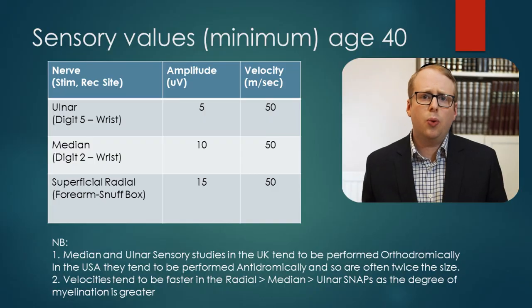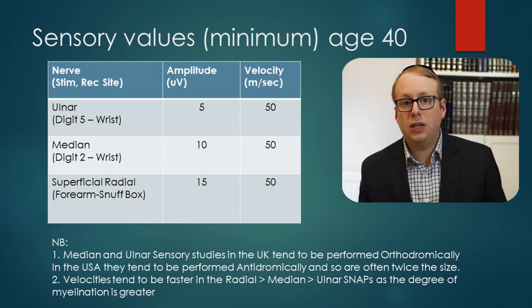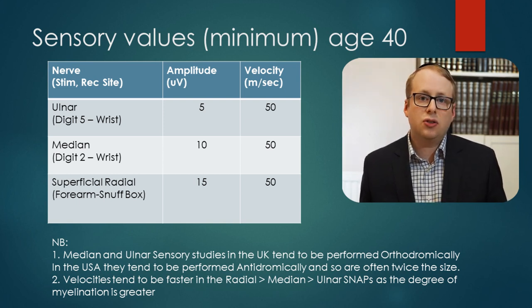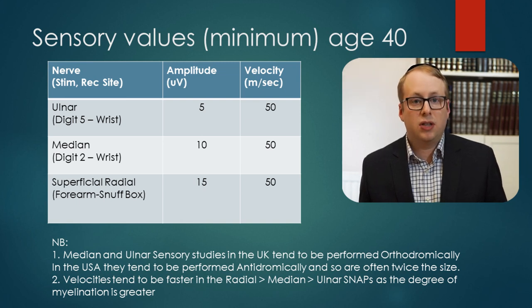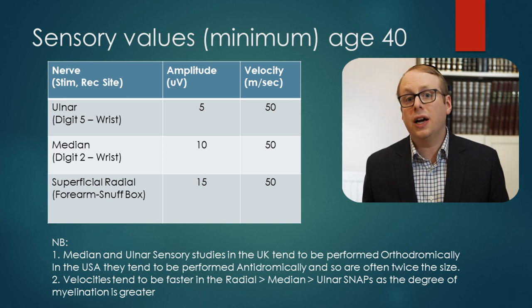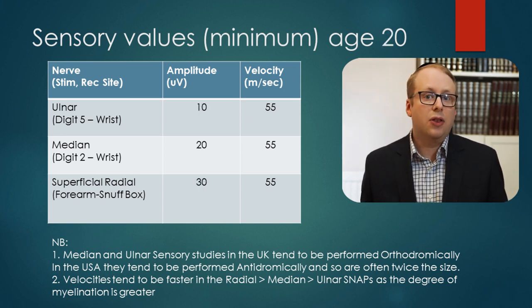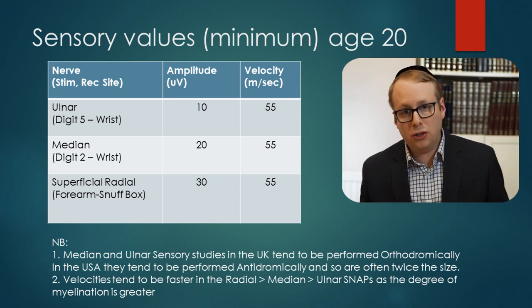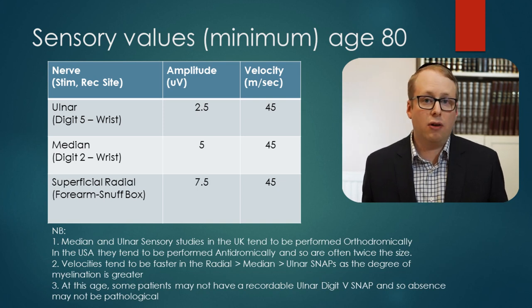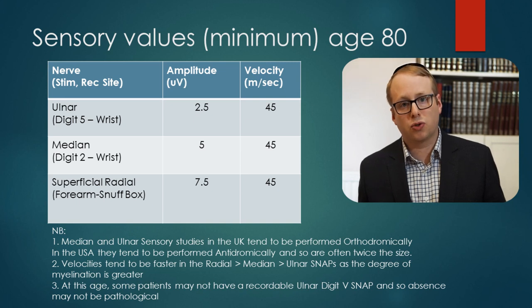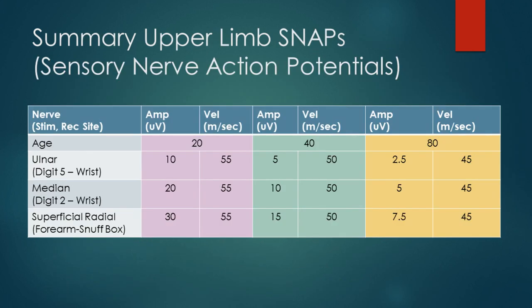Here are some minimum numbers for an average-sized person at the age of 40, and as a good rule of thumb, amplitude halves as age doubles. Let's start with the sensory values — they're quite simple. In the hand, we routinely measure ulnar, median, and radial sensory responses. These nerves should be in ascending order: 5, 10, and 15 microvolts in amplitude. A microvolt is tiny — it's a millionth of a volt. At the age of 20, these should be double that, so the ulnar, median, and radial responses should be at least around 10, 20, and 30 microvolts respectively. By the age of 80, these could be halved to 2.5, 5, and 7.5 microvolts respectively. Velocity should be at least 55 metres per second at the age of 20, 50 at the age of 45, and 40 by the age of 80.